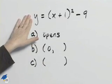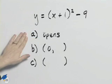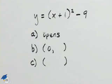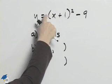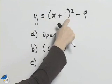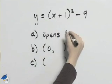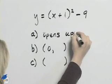Now that we've written the equation in standard form we should be able to do a, b, and c rather quickly. The first question for a is which direction does it open? And because the coefficient of the squared piece is a positive number we know it's going to open upward.